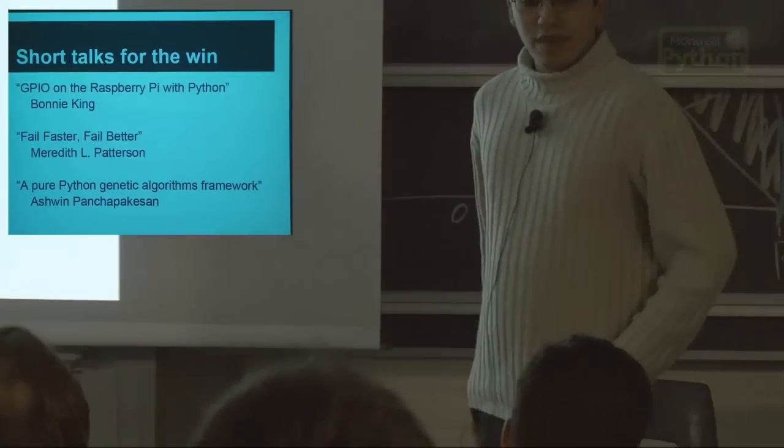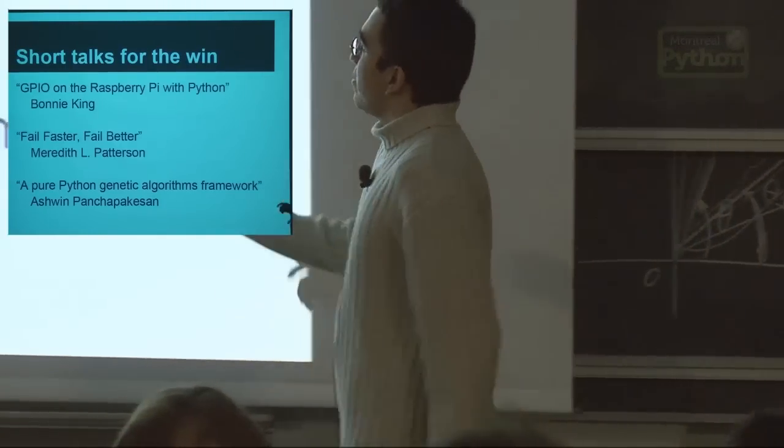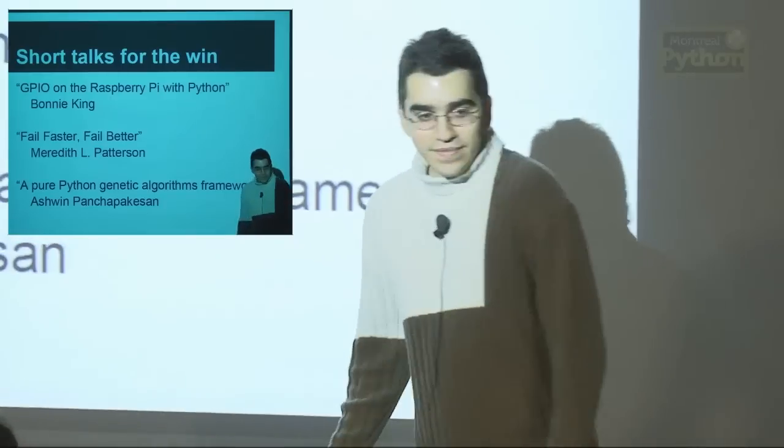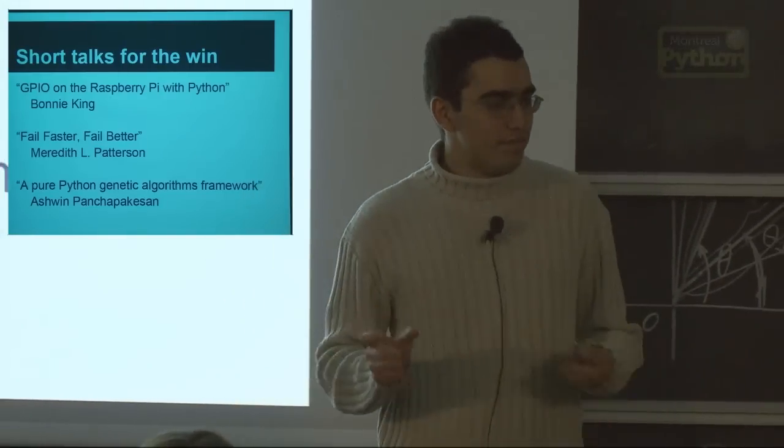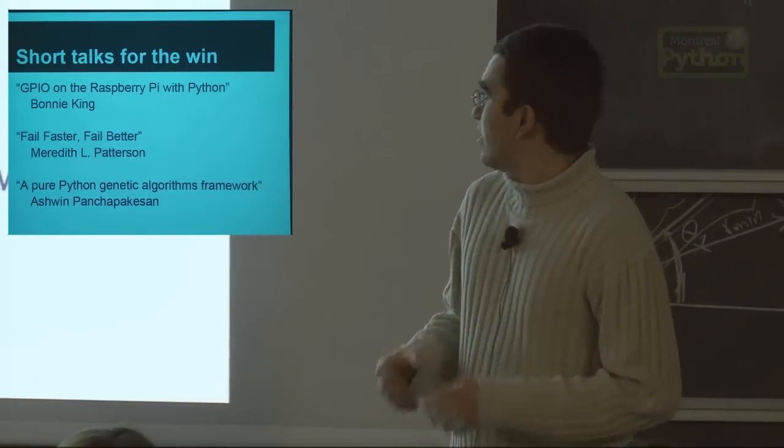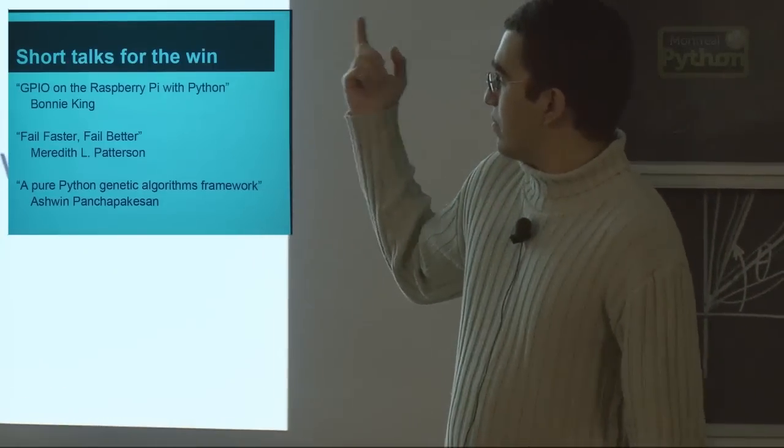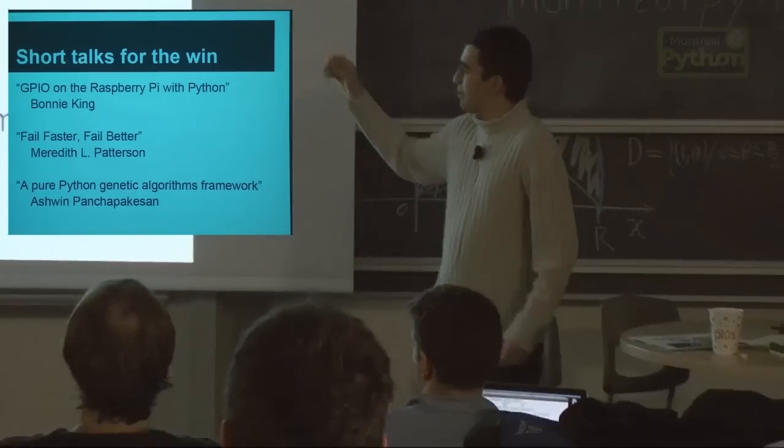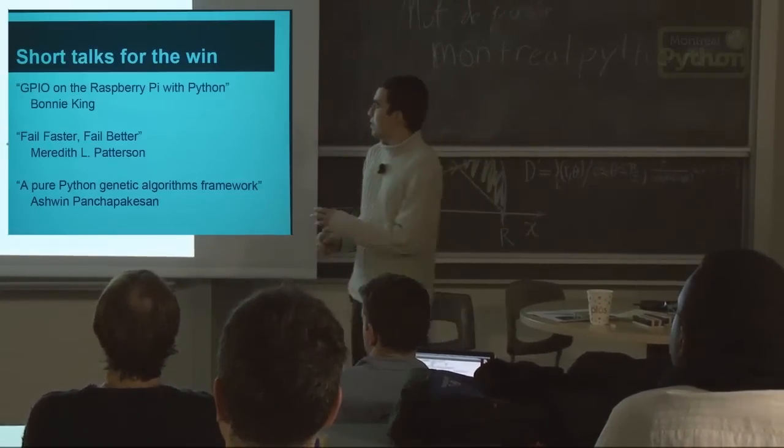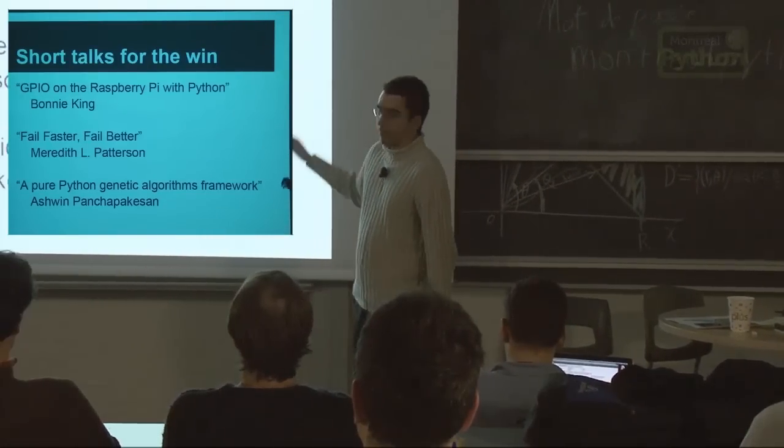So just a few talks you may want to see. GPIO and the Raspberry Pi with Python. Raspberry Pi is a micro-computer like the Arduino, but Arduino is a micro-controller. This one is a real micro-computer. And she made a five-minute talk demonstrating how you can have generic I/O on the Raspberry Pi.